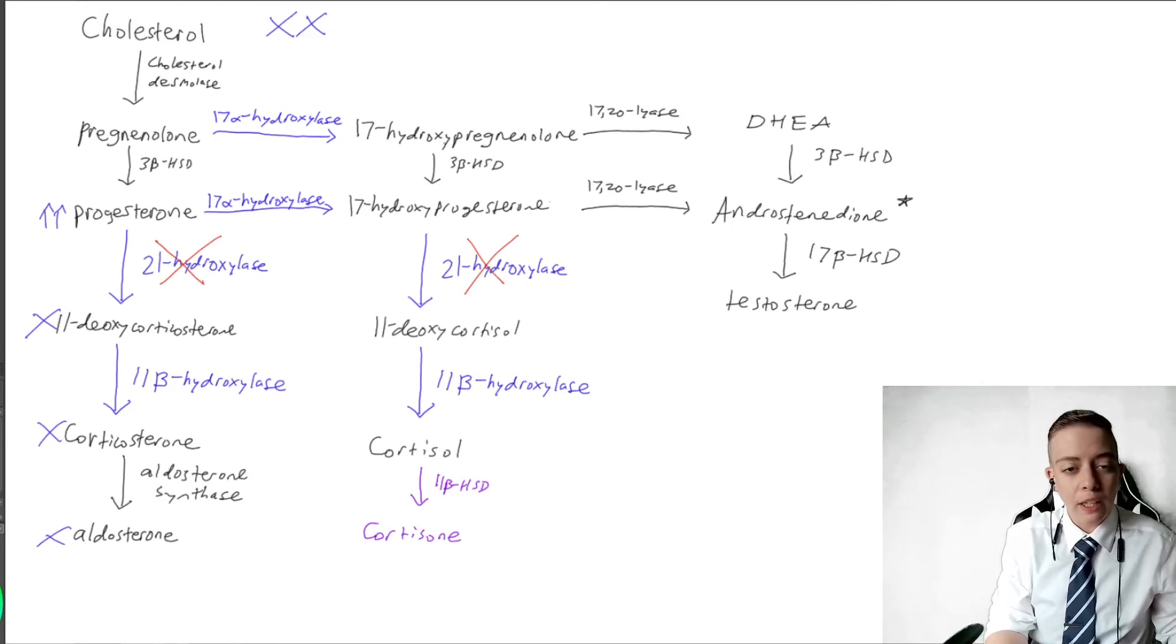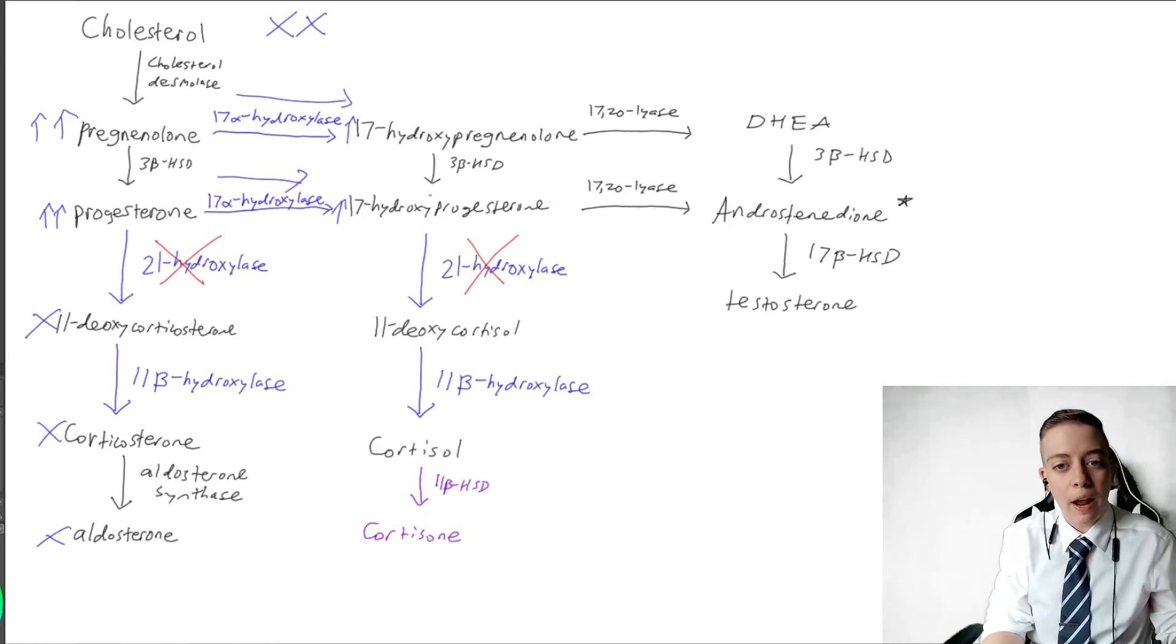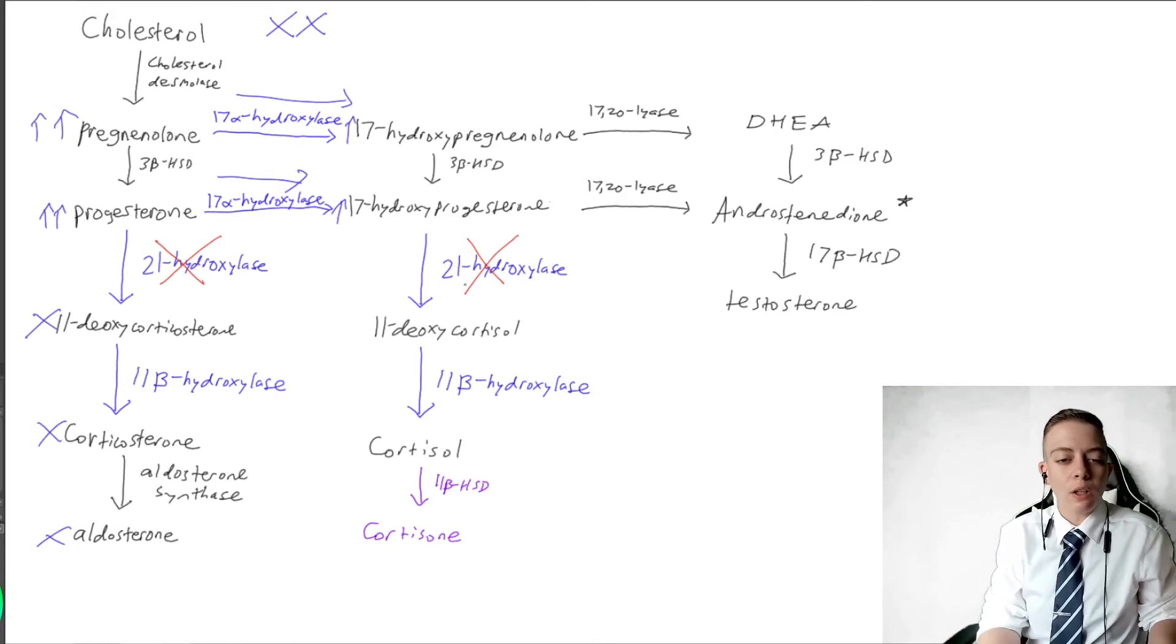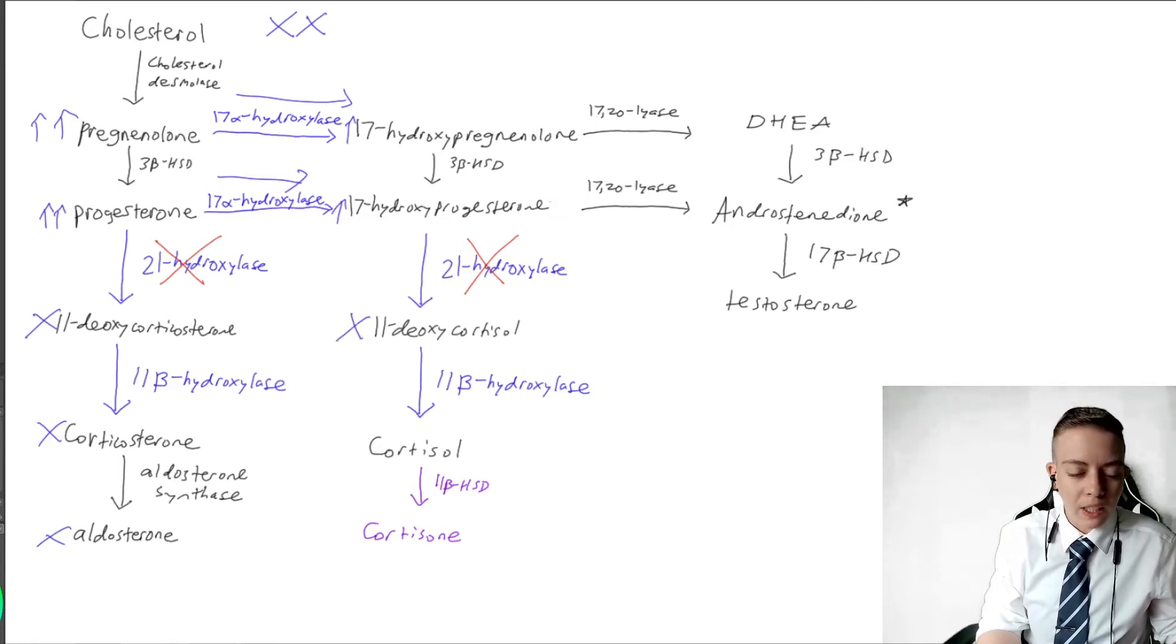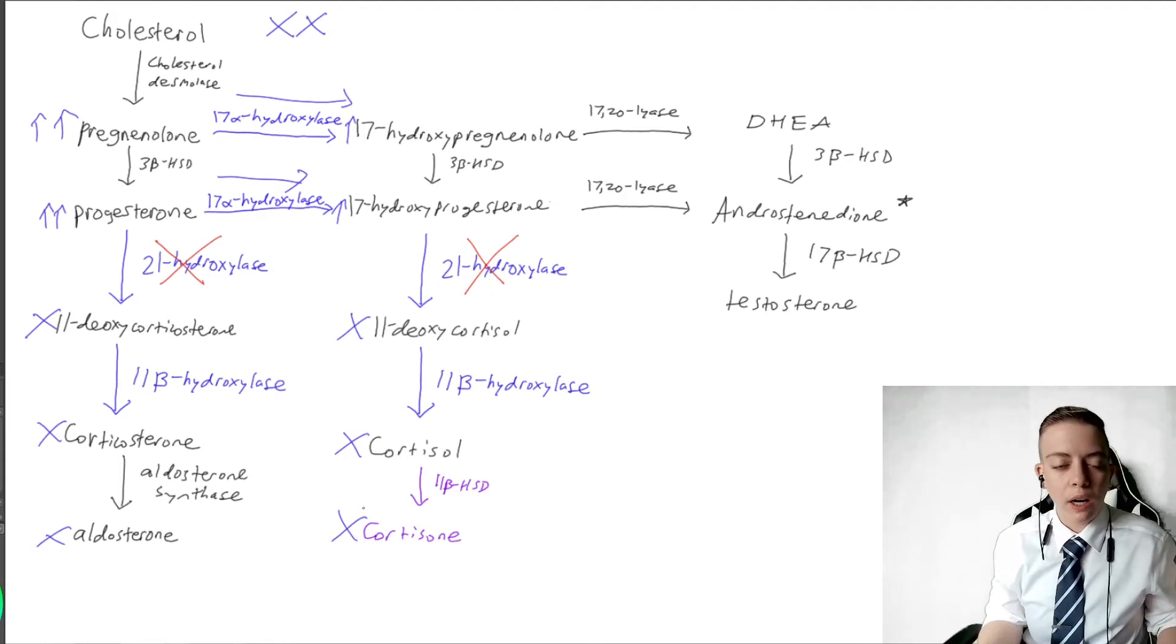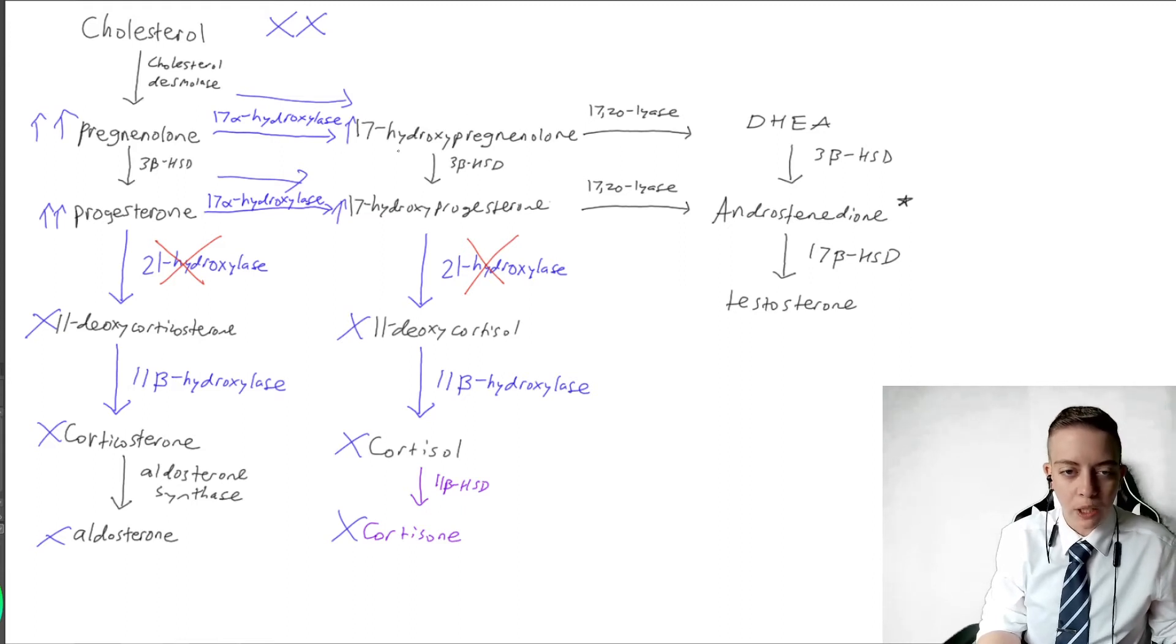And then this is going to spill over into our cortisol pathway. So we're going to favor this direction with both progesterone and pregnenolone because we're going to get increases in both of these. So we're going to get buildup in 17-hydroxypregnenolone and 17-hydroxyprogesterone. And so if we have a buildup in that, naturally some of it's going to try to go down the cortisol pathway. But we can't, we can't go down the cortisol pathway because we don't have 21-hydroxylase again. So we can't make 11-deoxycortisol, we can't make cortisol, we can't make cortisone. So what else can we do? Well, 17-hydroxyprogesterone and 17-hydroxypregnenolone are going to keep building up. We're going to get a huge increase in these.